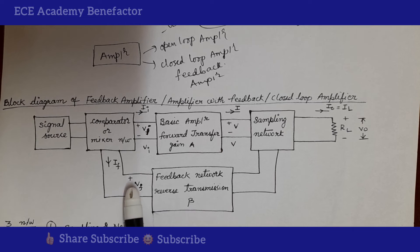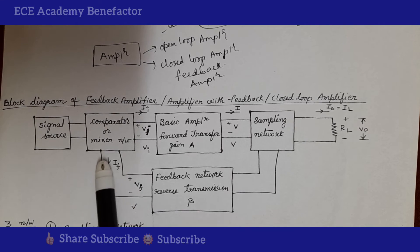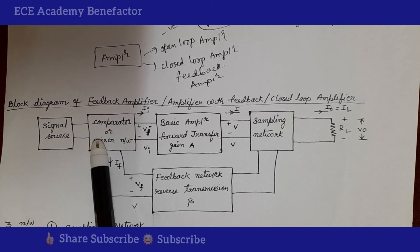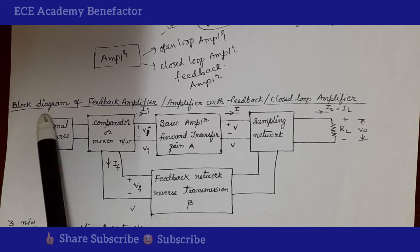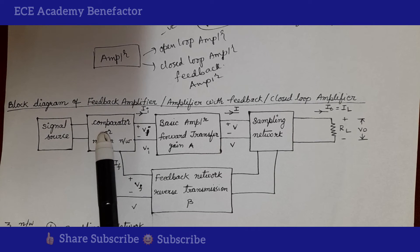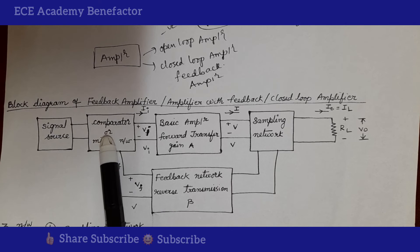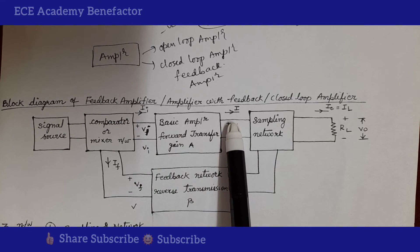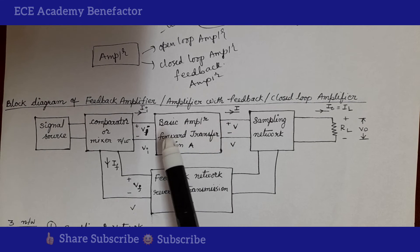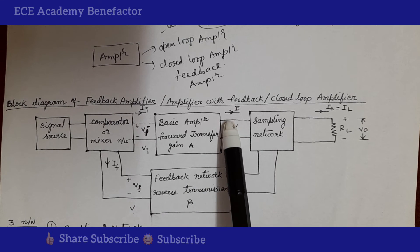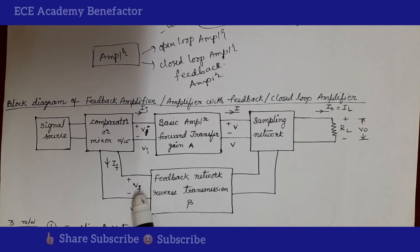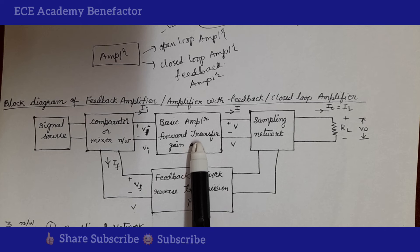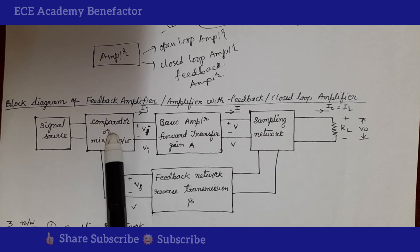The feedback voltage is Vf. The input signal comes from a signal source and is mixed with the feedback voltage at a mixer or comparator network, which is a summer circuit. The output of the comparator is Vi. The voltages in the diagram are: Vi (input voltage), V (output of amplifier), V-naught (output voltage), and Vf (feedback voltage). The block diagram of the feedback amplifier consists of: amplifier of gain A, feedback network of ratio beta, a sampling network, a mixer, and a signal source.